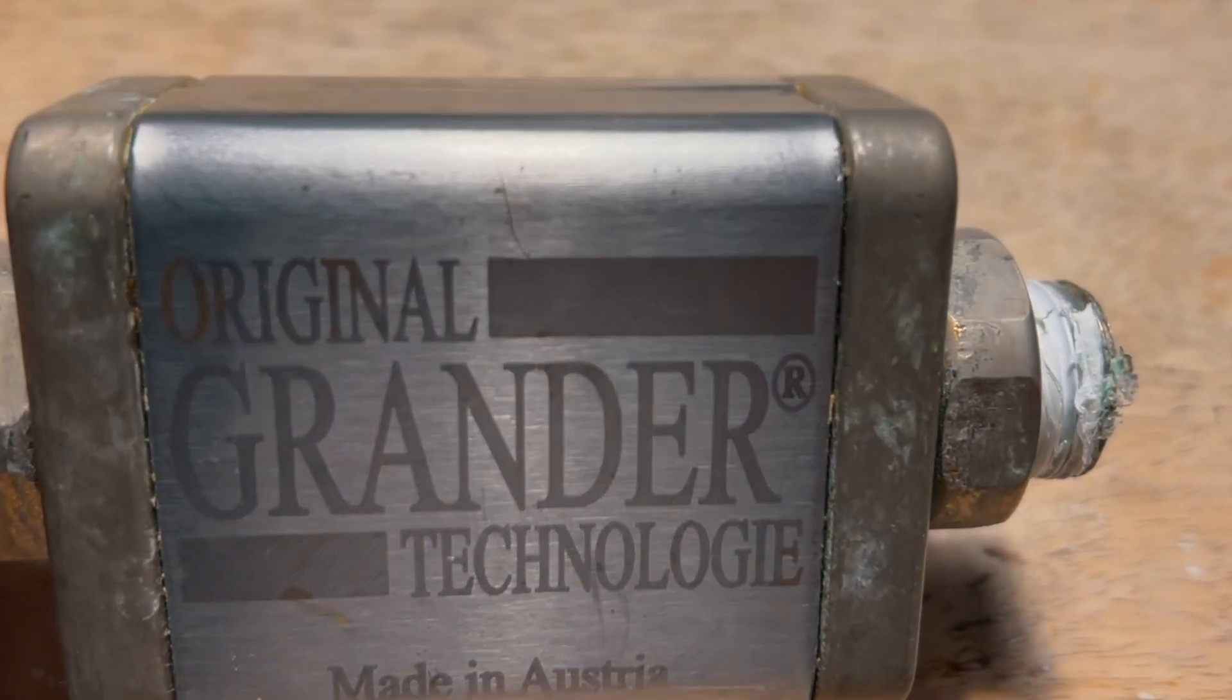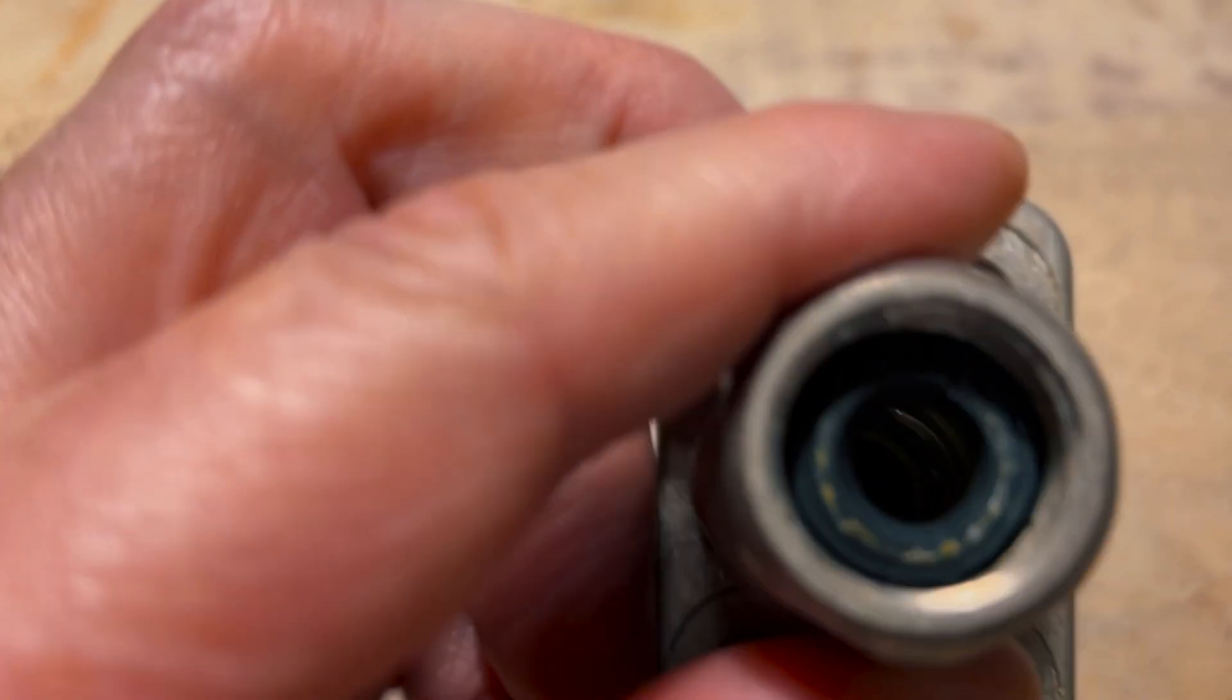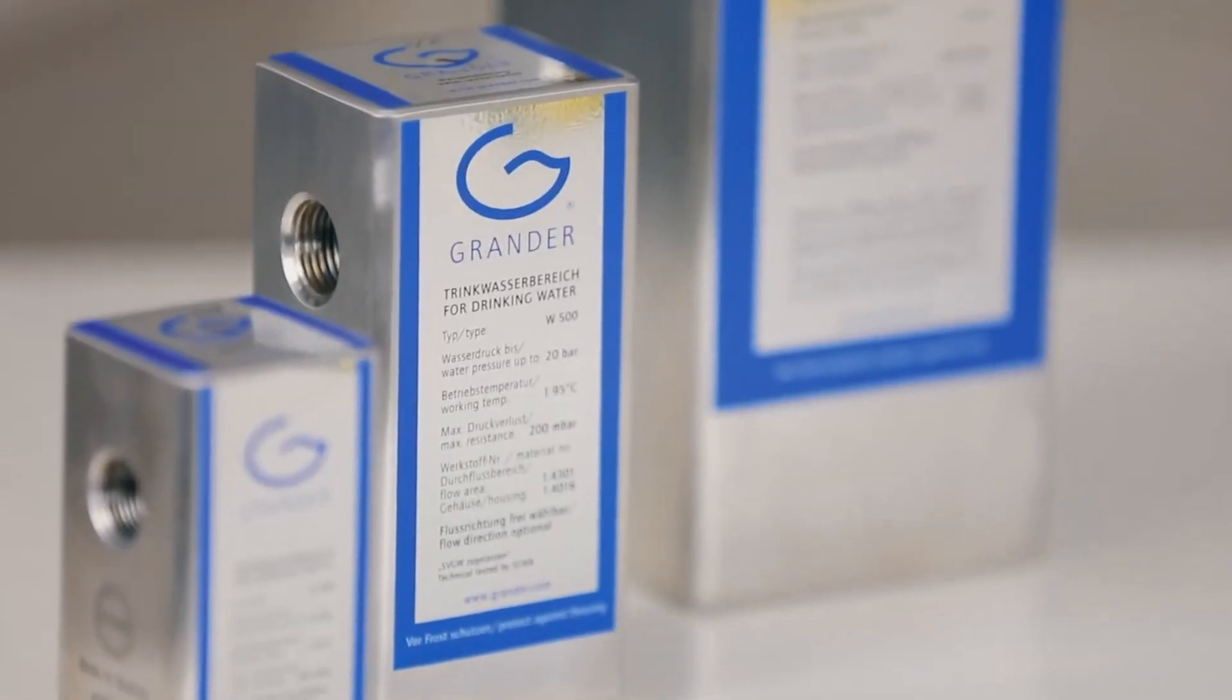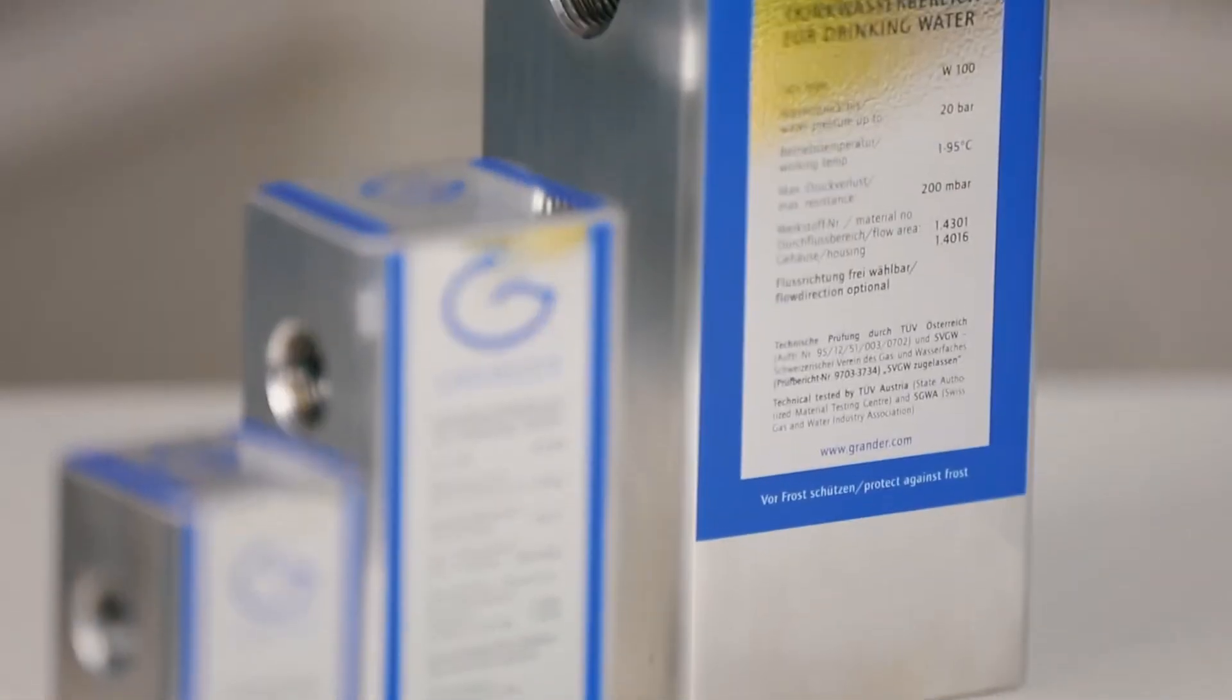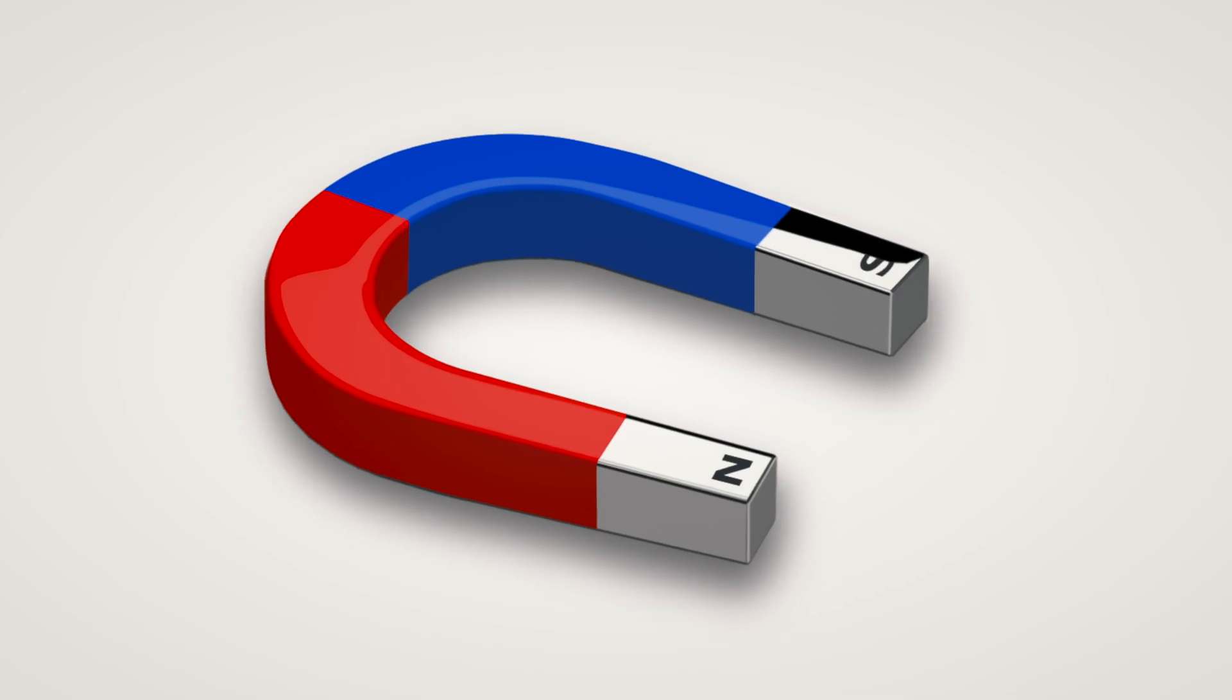Now I bought a Grander filter used off of eBay years ago because they are pretty expensive new, but to be honest the time I used it I didn't really feel much of a difference. But to be fair I'm not really sure if it's an original Grander filter or if it's a copy. I found this video on YouTube on how to make one yourself and although I don't believe that a Grander filter uses magnets I thought this is interesting and I'm going to try this.